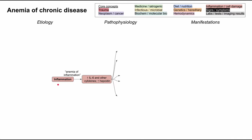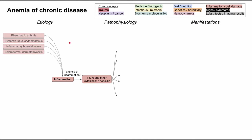As the name suggests, anemia of chronic disease can be caused by many chronic diseases. There are first a bunch of diseases that are inflammatory in etiology — a lot of rheumatologic conditions like rheumatoid arthritis, systemic lupus erythematosus, inflammatory bowel disease (that's Crohn's disease and ulcerative colitis), as well as scleroderma and dermatomyositis. Those are all inflammatory diseases that can lead to anemia of chronic disease.